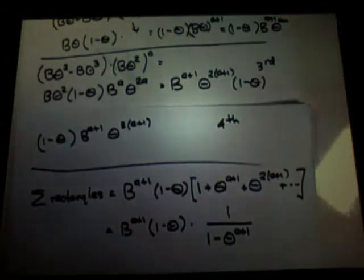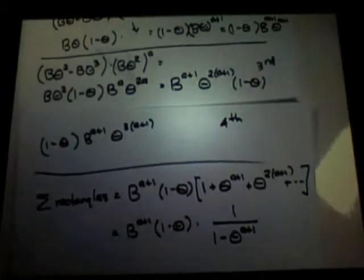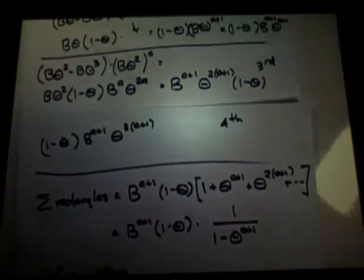Now remember, theta was supposed to be arbitrarily close to one, but not one or more. Let's define one minus theta, which is a positive number, as epsilon. So theta is one minus epsilon.